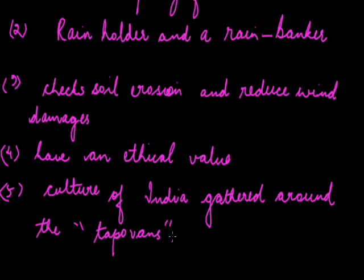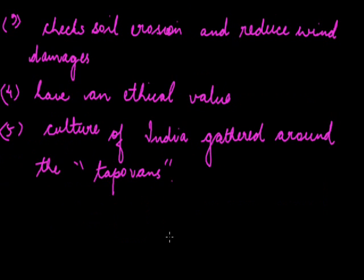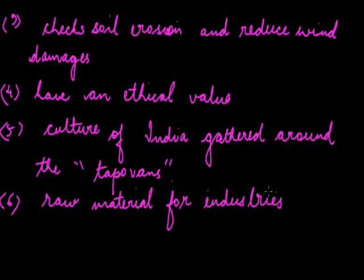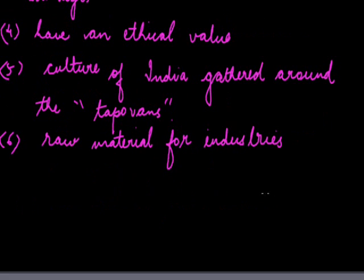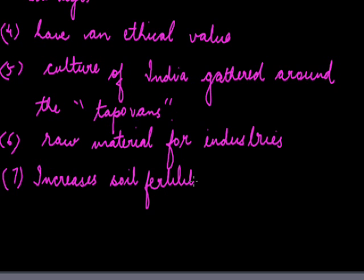Other uses: forest products provide raw material for industry. They help in setting up of industries which act as a boon for the country in other implied ways also. They provide raw material for industries. Seven, we can say that it provides humus to the soil and thereby increases soil fertility.